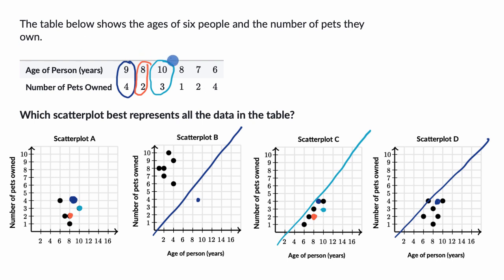Now we can verify that by looking at the other points. Does it have eight, one? Eight, one is right over here. Does it have seven, two? Seven, two is right over here. And then last but not least, six, four is also here. Six and then four. So scatter plot A is looking good.